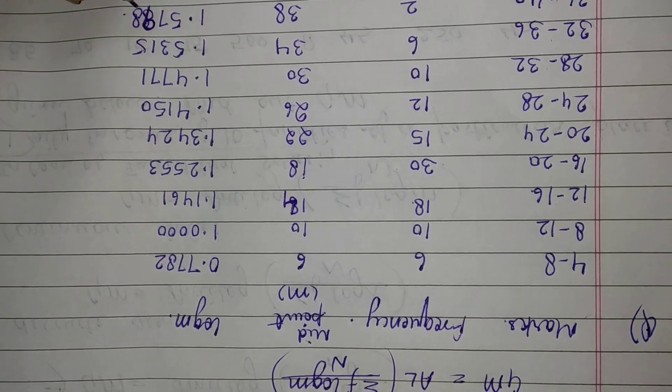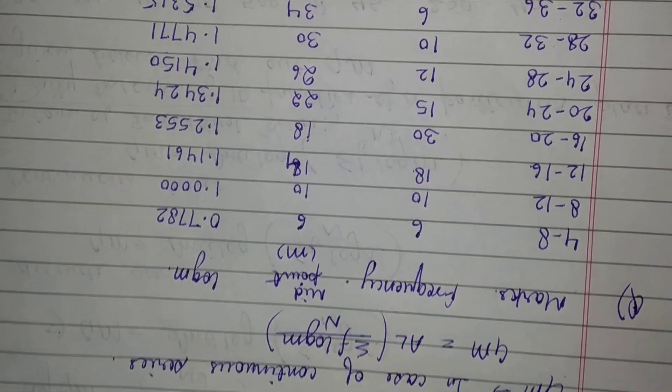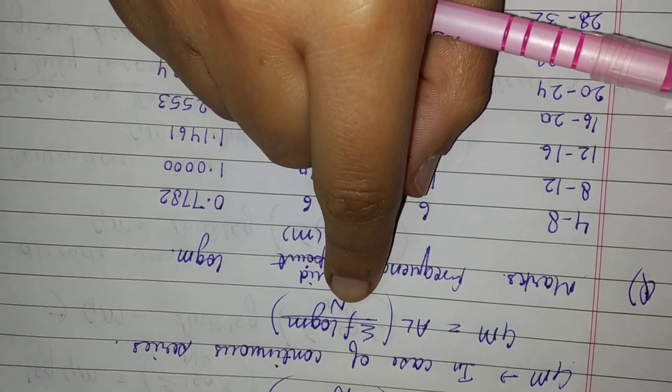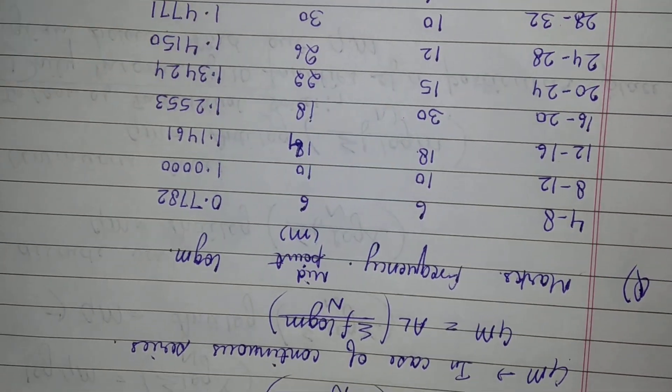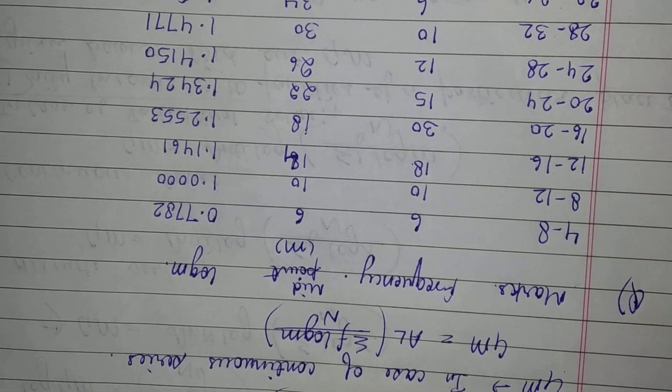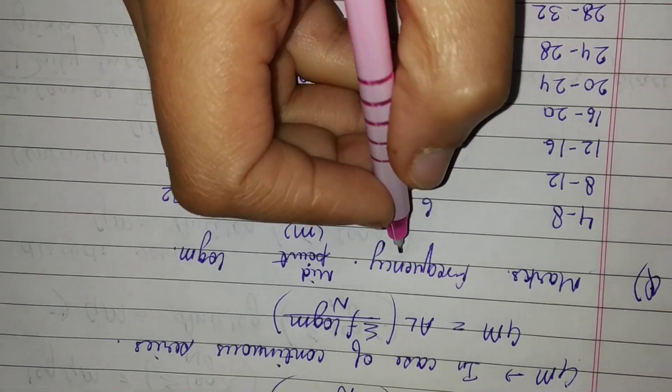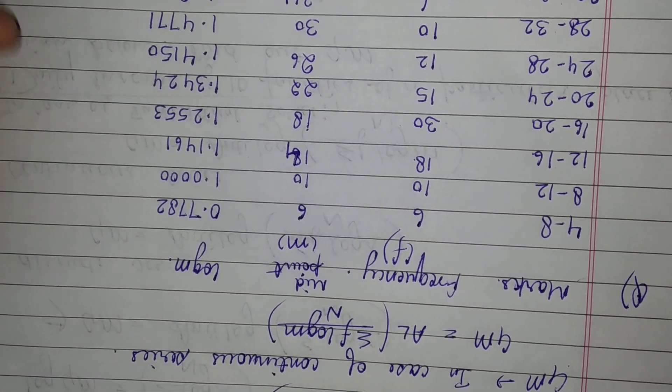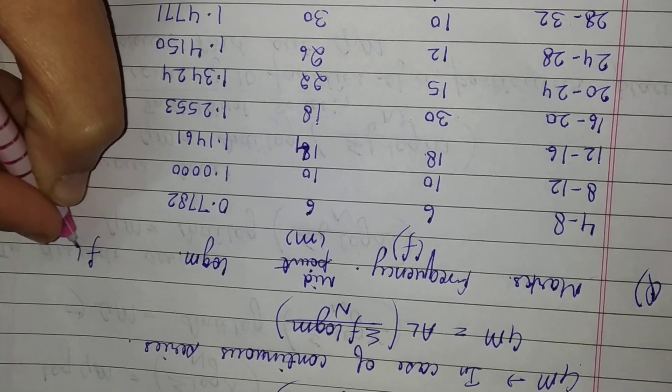This is your log m value, but in the formula I need f log m, so I will multiply the frequency f with this log m value and get f log m.